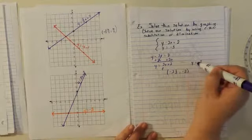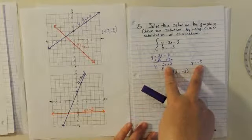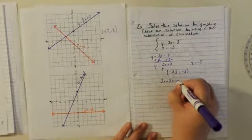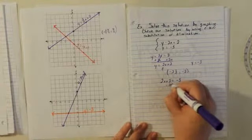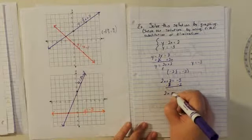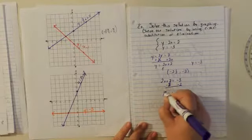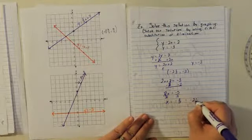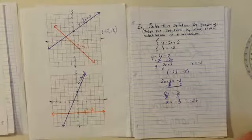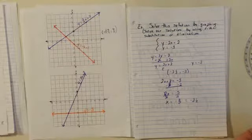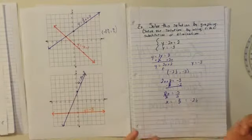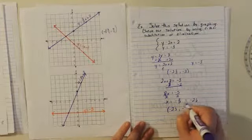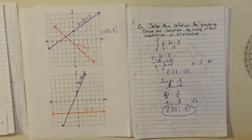Once again, we have two equations that are solved for y, so we can set them equal to each other. Two x plus 2 equals negative 3. Subtract 2 from both sides: we get 2x equals negative 5. Divide by 2 and x equals negative 5/2, which equals negative 2 and a half. I guessed negative 2 and a third — it's actually negative 2 and a half. My straight edge was not quite straight enough. The precise answer is negative 2 and a half and negative 3. We don't need to solve for y because it's already given to us — we already know y equals negative 3.